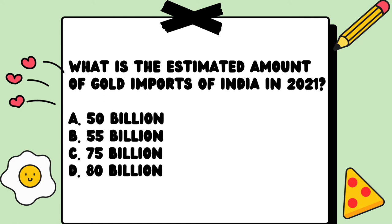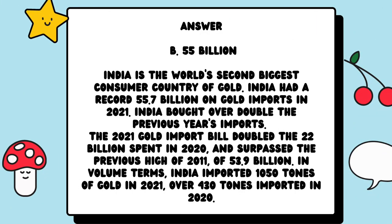The next question is: What is the estimated amount of gold imports of India in 2021? Option A: 50 billion US dollars, Option B: 55 billion US dollars, Option C: 75 billion US dollars, and Option D: 80 billion US dollars. And the answer is B. 55 billion US dollars. You can read the detailed explanation to the answer on the screen.